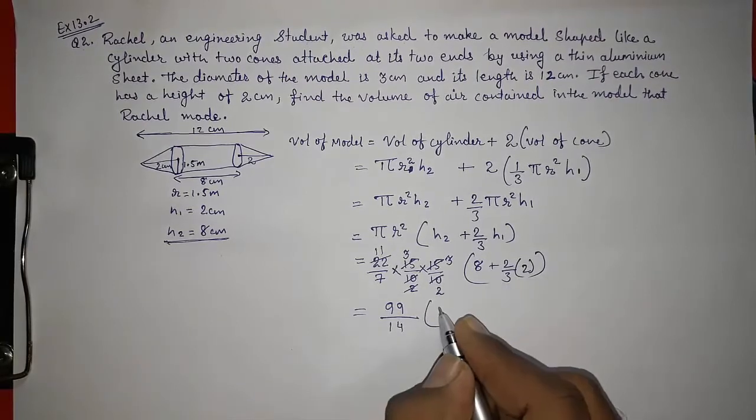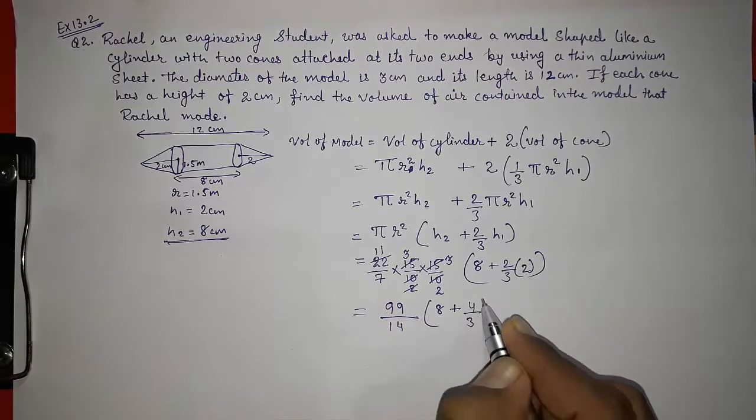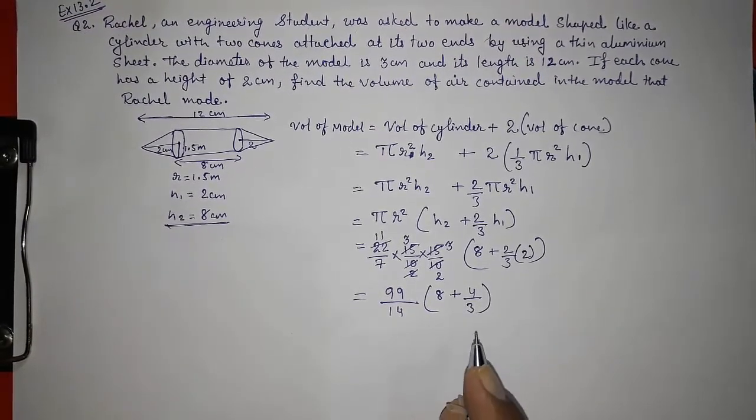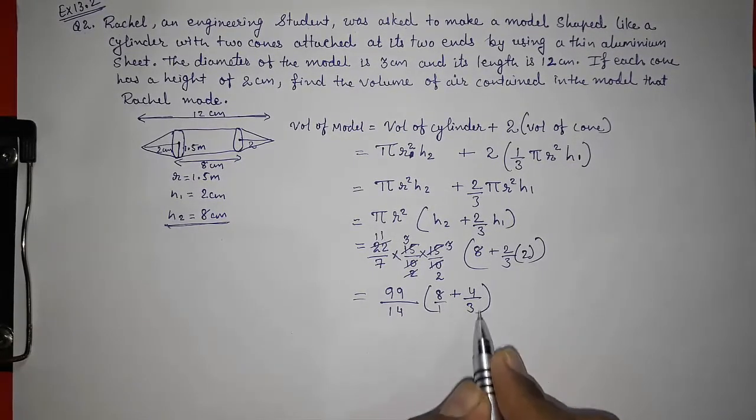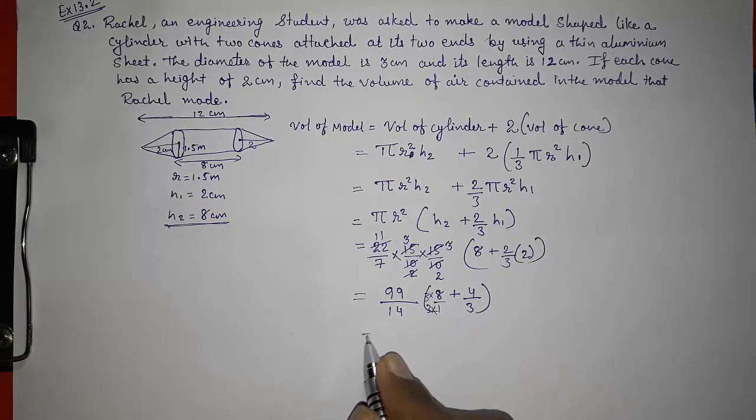And in the bracket here we will get 8 plus 2 into 2, 4/3. So this is in fraction. So we have to take out LCM. Here it's 8/1 plus 4/3. So into 3, into 3. 3 into 8.